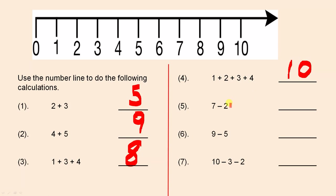Now you can also do subtraction or take aways. The rule is the same — you always put your pencil on the first number. Now since it is a minus sign, we go to the left. The first four all had plus signs so we went to the right; now we have minus signs so we're going to the left. So here we are on the seven, minus two: one, two. We've landed on the five, so the answer is five.